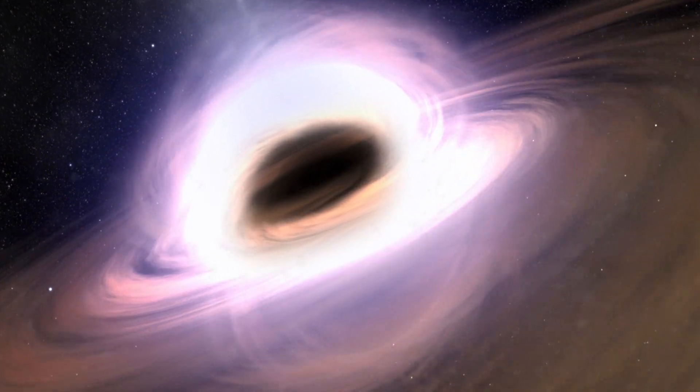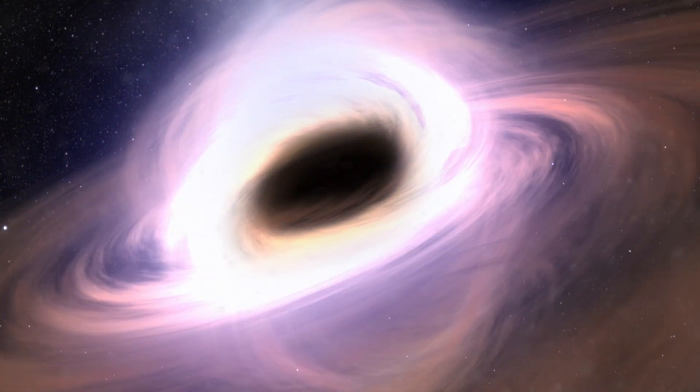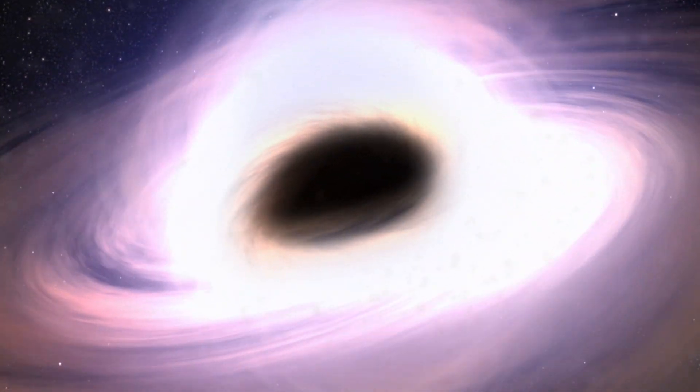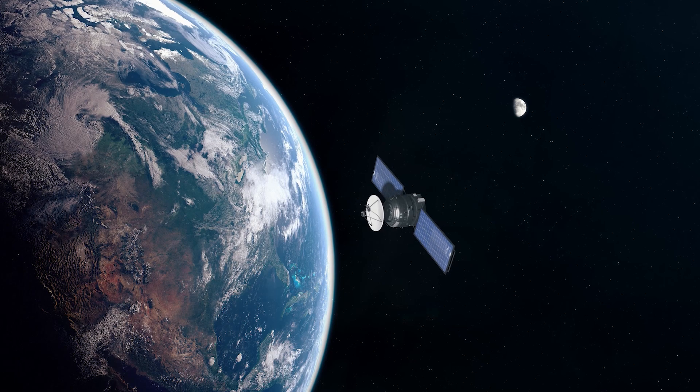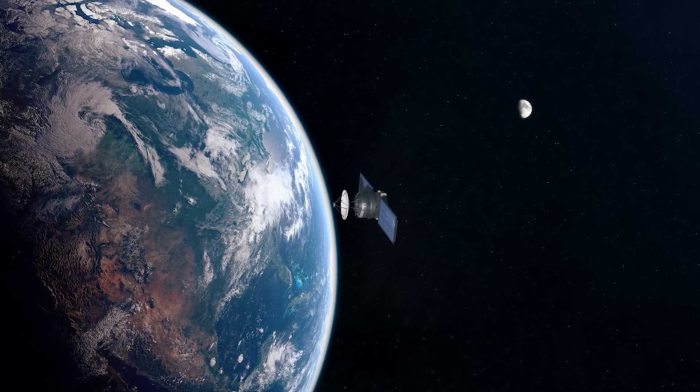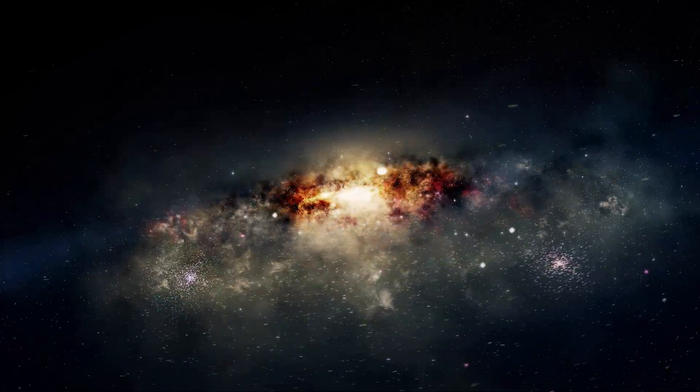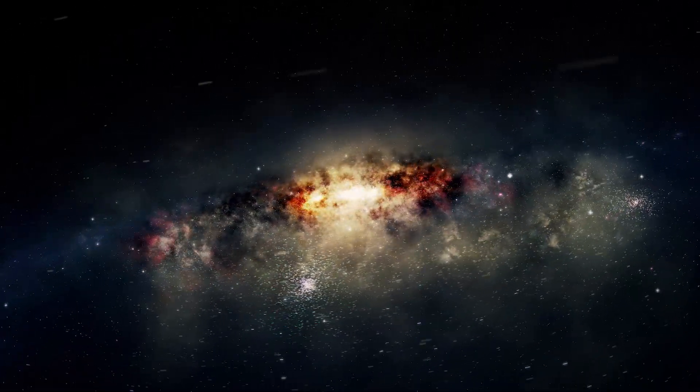But black holes are usually so big that once you get too close to one, you can't escape their pull no matter how fast you go, so you end up falling into it the same way satellites fall in the Earth's oceans. Objects in the galaxy are too spread out and far away from one another for them to just fall into a black hole.